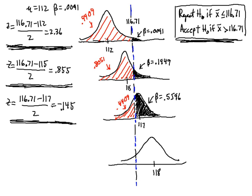Then we will find beta, the probability that we will accept the null hypothesis under the decision statement. Notice the decision statement says we'll accept the null when the sample average is greater than 116.71.